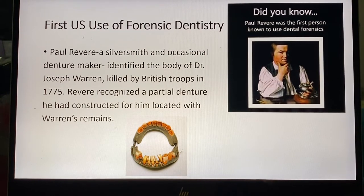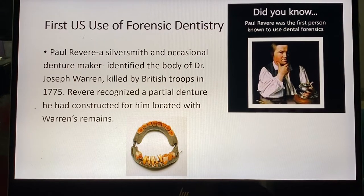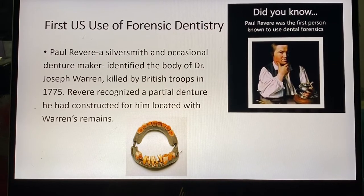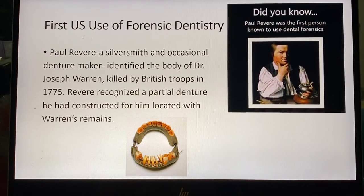Paul Revere would put his markings and the patient's name on the dentures he made. In the Revolutionary War, a person killed by British troops — Dr. Joseph Warren — was placed in a grave and was very decomposed when discovered. It was Paul Revere who identified him by saying he had made those dentures for Joseph Warren. For the exam, you need to know who Paul Revere is and that this was the first case of forensic dentistry used in the US — you do not need to memorize Joseph Warren or the date.